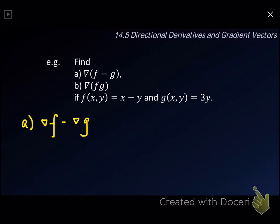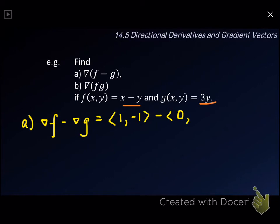So if f(x,y) equals x minus y, then gradient of f equals (1, -1). The gradient of g: since there is no x in g, the partial derivative with respect to x is 0, and the partial derivative with respect to y is 3. So the outcome will be 1 minus 0, giving 1 for the i-component. For the j-component, negative 1 minus 3 gives negative 4.